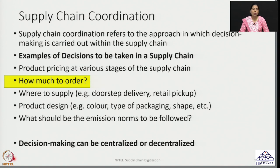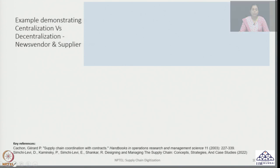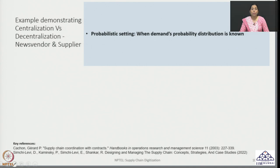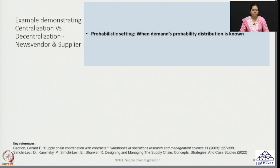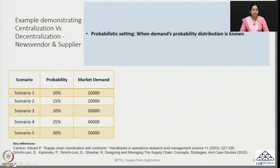However, we do know some amount of information — what potential values the demand could be taking. So in this example demonstrating decentralization versus centralization for the news vendor and the supplier, instead of the actual demand, what we know is the demand's probability distribution. We know what are the potential demand levels and the probability associated with each. For example, we have five possible scenarios: the demand could be 10,000, 20,000, 30,000, 40,000, or 50,000 units respectively.